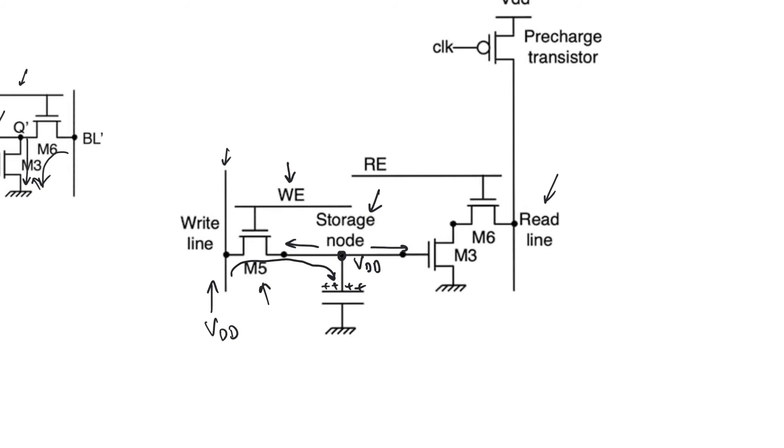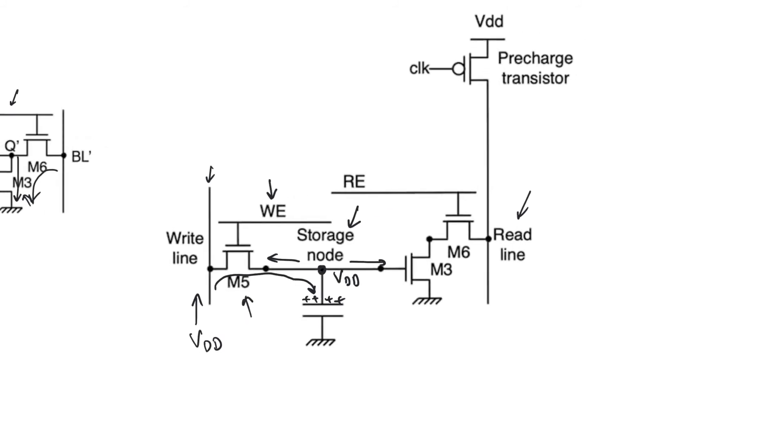So if you want to read, you can pre-charge the read line. You can pre-charge it actually to VDD or VDD over 2, but we are pre-charging it to VDD in this case. So we pre-charged the read line to VDD, and then we enable the read access transistor M6 by raising read-enable to 1. So we raise read-enable to 1, and now the VDD on this read line is going to discharge through M6 and M3 because M6 is on, because read-enable is on, and M3 is on because there's a VDD stored here. And so we are going to read a zero volt. So when you wrote a VDD on the storage node, you read a zero volt from the read line. So there's kind of an inversion happening here, but that's okay.